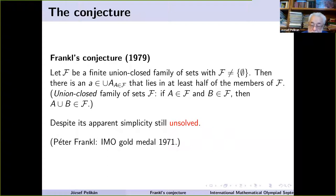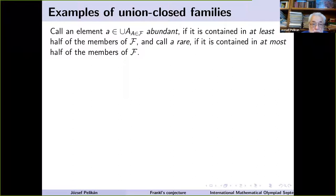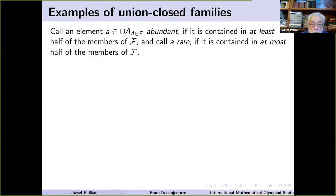Now let's try to get a little more acquainted with the conjecture. First I want to show you a couple of examples of union-closed families to get a feeling for the objects we're talking about. First comes a definition: call an element which belongs to the union of sets abundant if it is contained in at least half of the members of F, and call the element rare if it is contained in at most half of the members of F.